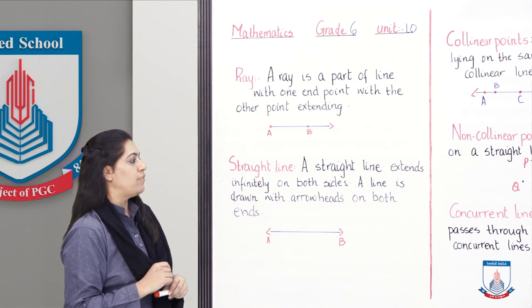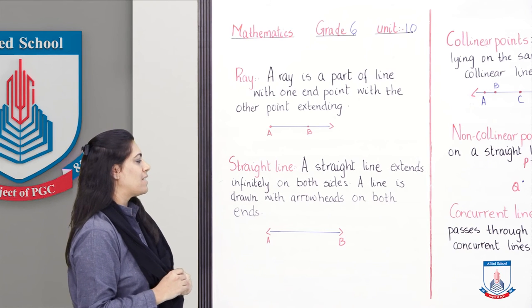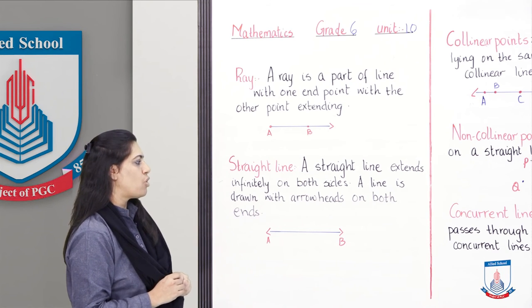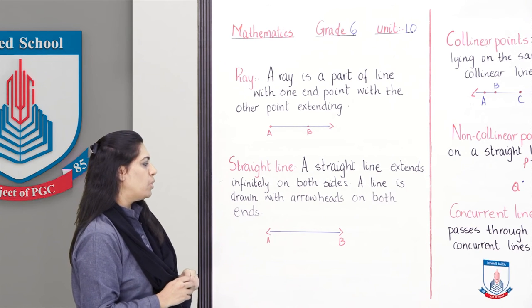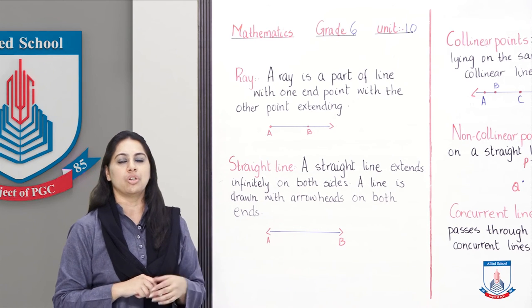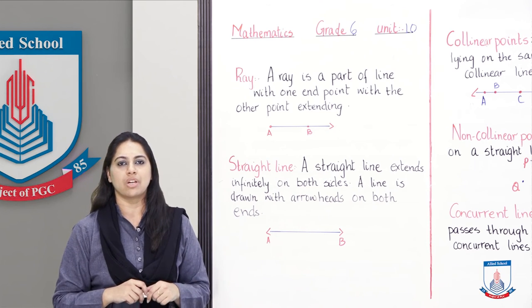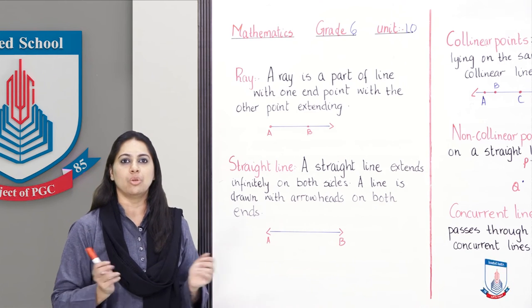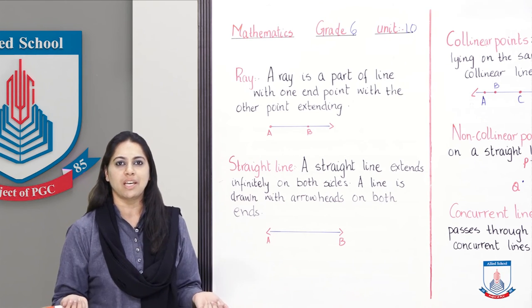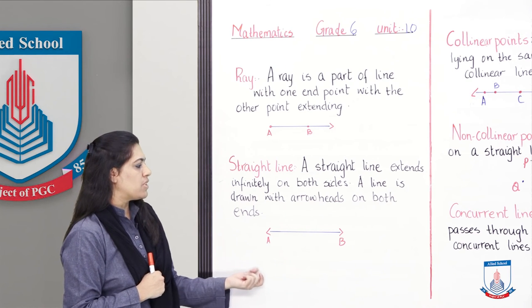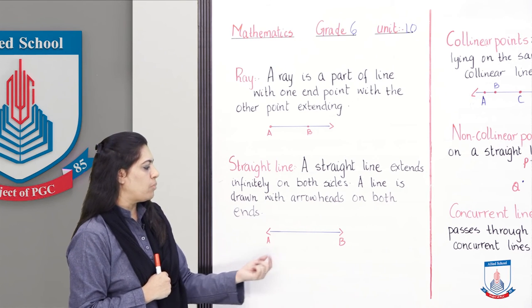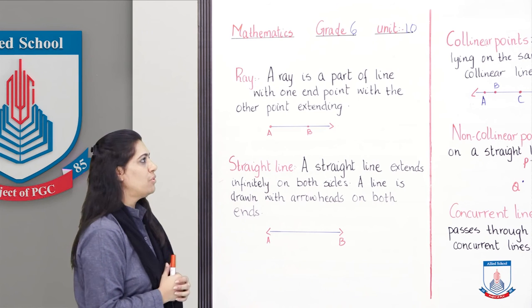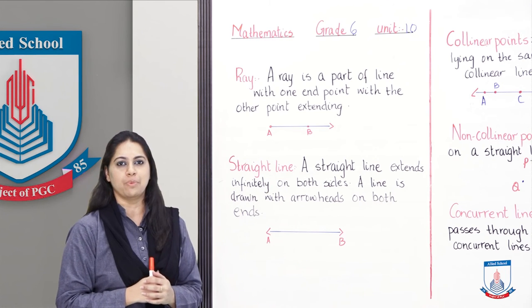Next is straight line. A straight line extends infinitely on both sides. A line is drawn with arrowheads on both ends. Straight line extends infinitely on both sides - it keeps going in both directions. We represent it with points A and B, and it has arrowheads on both ends. Let's move towards the next board.